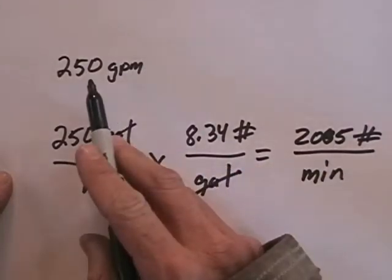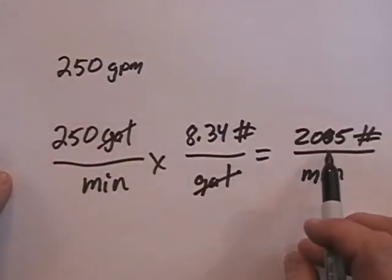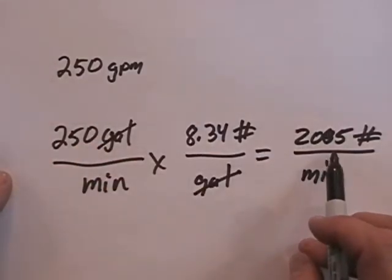So a hose line that's discharging 250 gallons per minute is actually discharging 2085 pounds per minute.